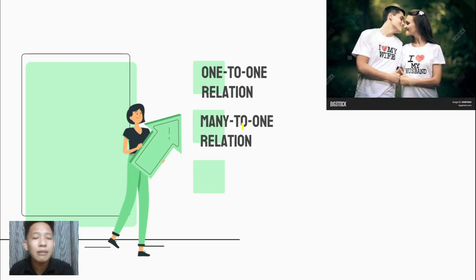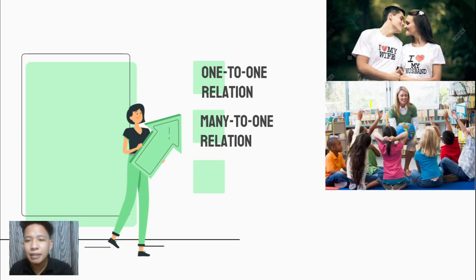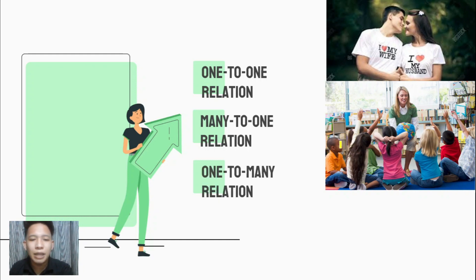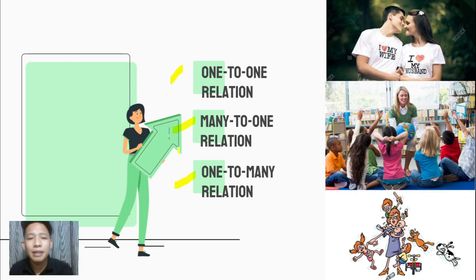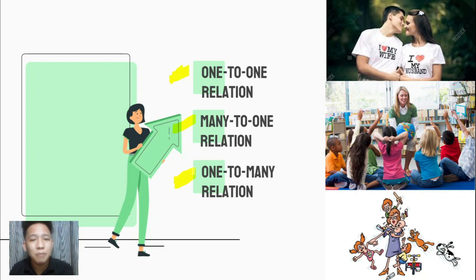Next, we have many-to-one relation, wherein the example is students to teacher. And we also have one-to-many relation, wherein the example is a mother to her children. So, which among these kinds of relations is a function, and which illustrates just purely a relation?